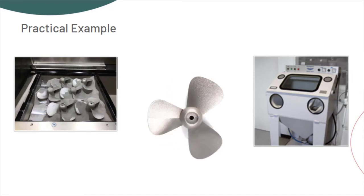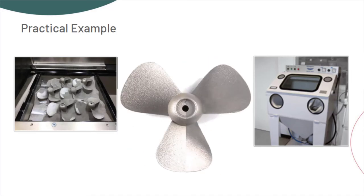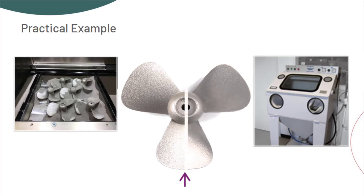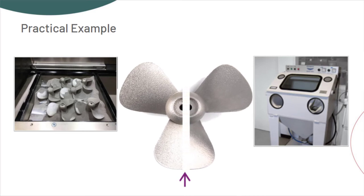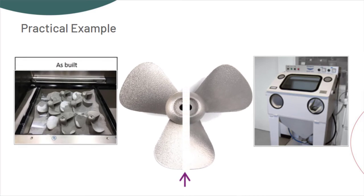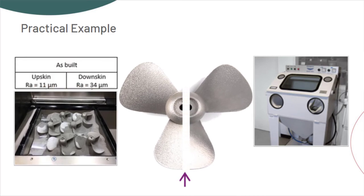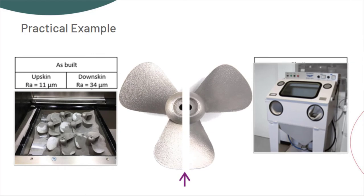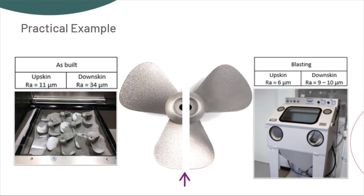By comparing the surface roughness of this part before and after blasting, it is visible that the roughness in up skin was reduced from 11 micrometers to 6 micrometers, and in the down skin from 34 micrometers to 10 micrometers.